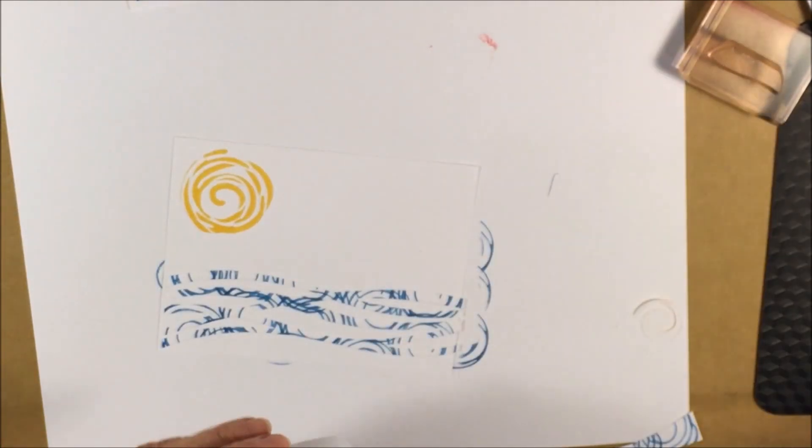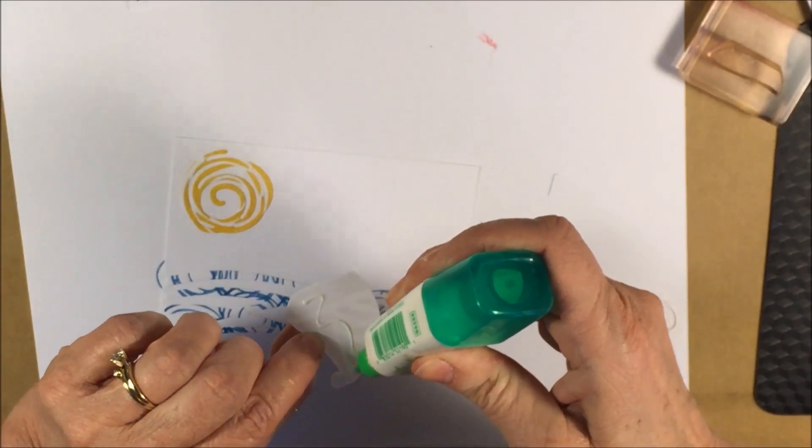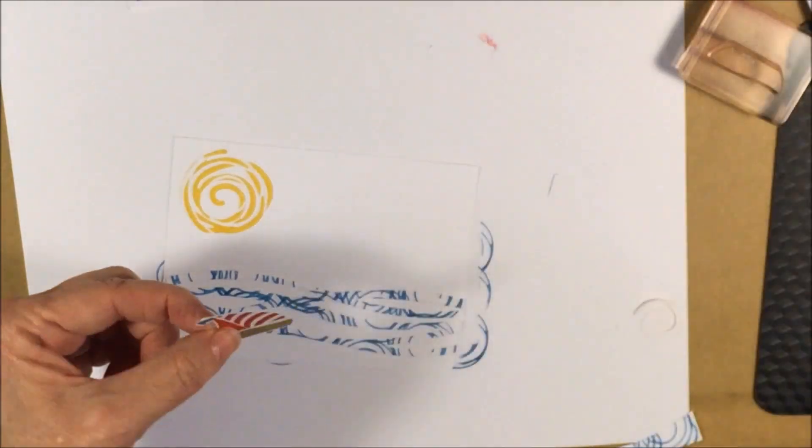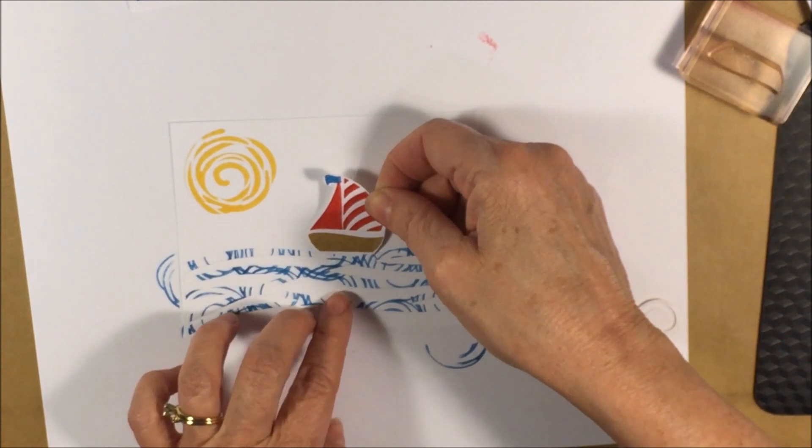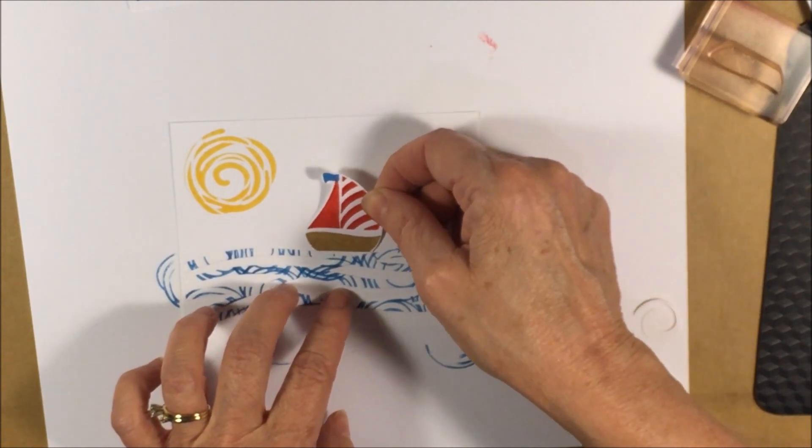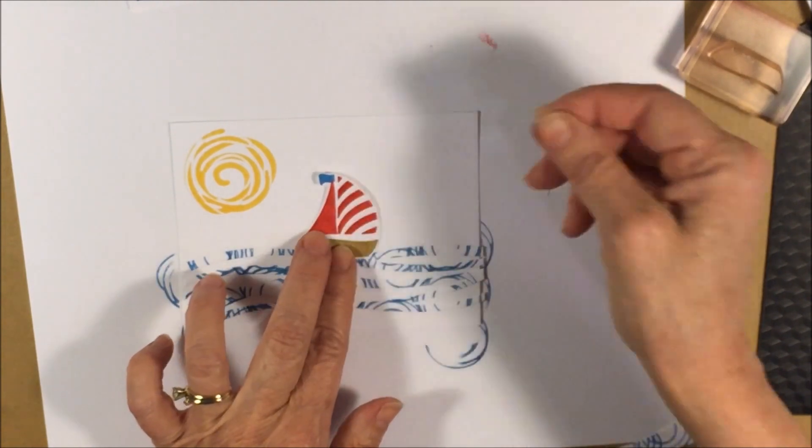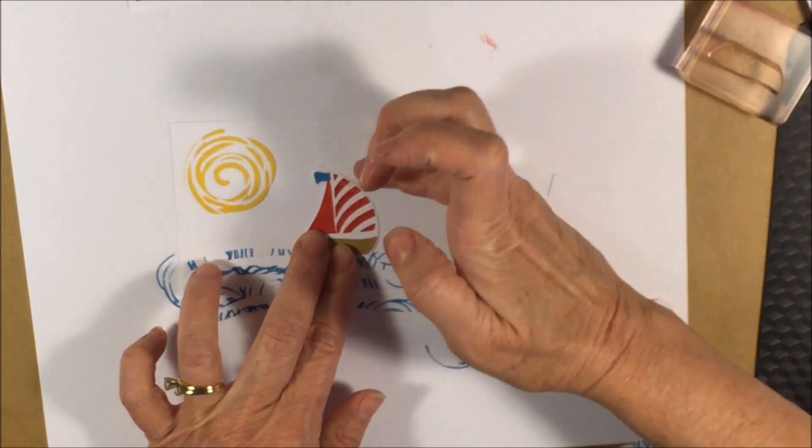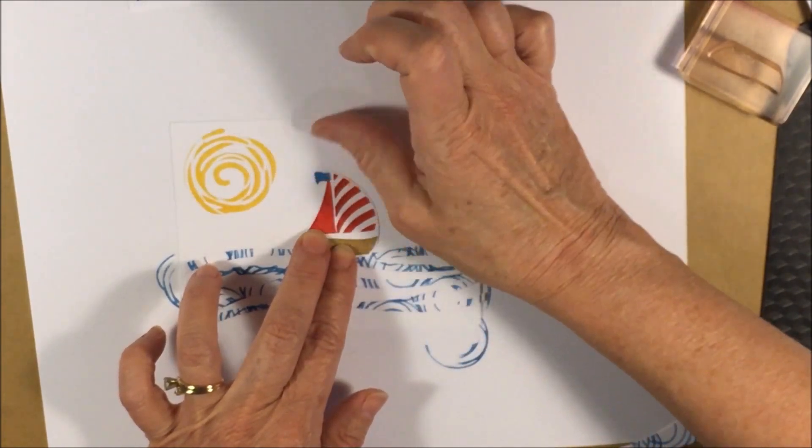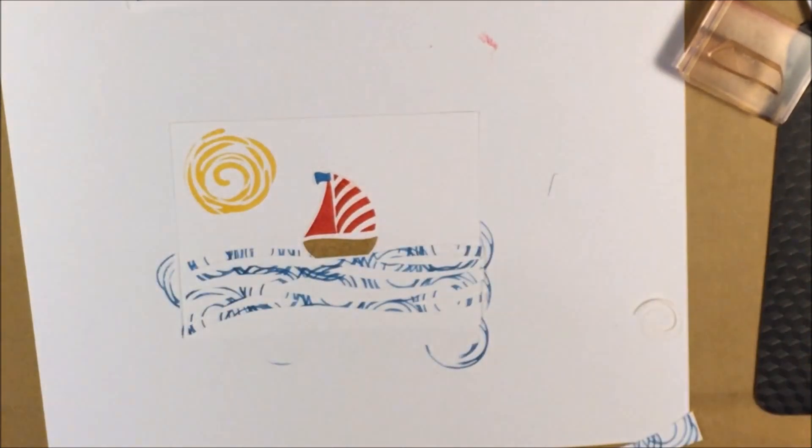Then we take our little sailboat, position him or her, whatever it is, right there. Uh oh. Got a little bit of glue. My hands are sticky.